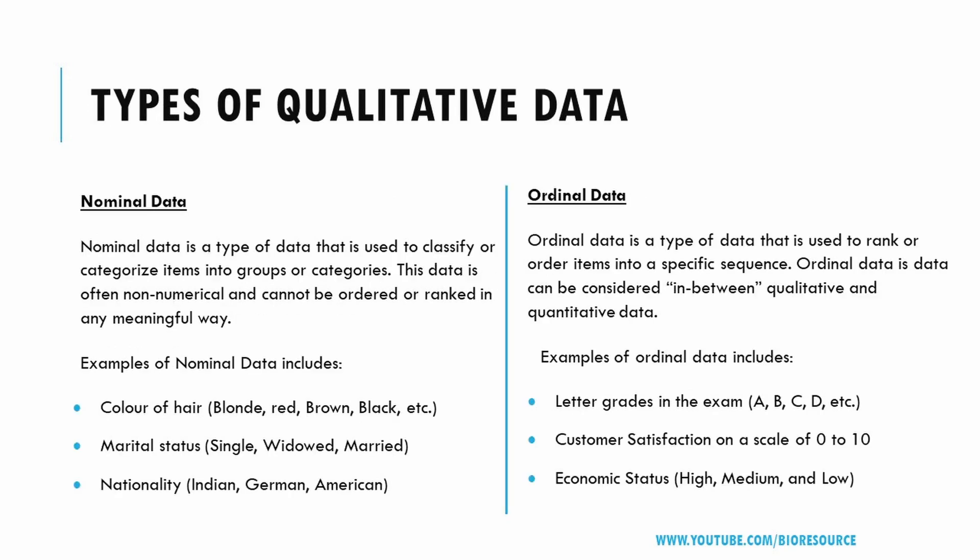Qualitative data can be further classified into two types: nominal data and ordinal data. Nominal data is a type of data used to classify or categorize items into groups or categories. It is often non-numerical, cannot be ordered or ranked in any meaningful way, and its values are distributed into distinct categories.